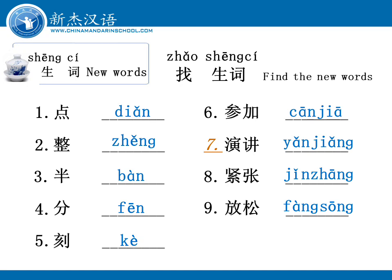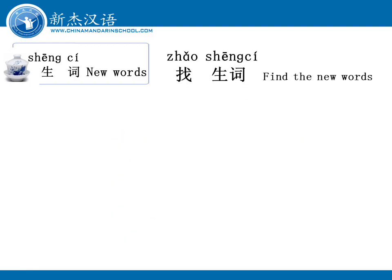放松。 找生词 — find the new words. We've learned this kind of practice before. Now I'm going to read a sentence and you're going to pick out the new words in the sentence. Now sentence one.